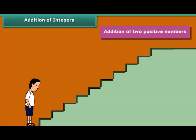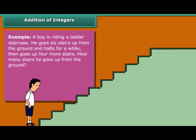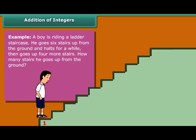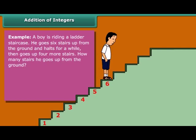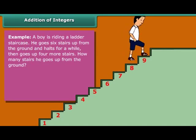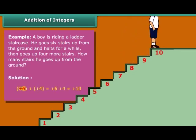Addition of two positive numbers. Example: A boy is climbing a ladder staircase. He goes six stairs up from the ground and holds for a while, then goes up four more stairs. How many stairs does he go up from the ground? Plus 6 plus plus 4 equals plus 6 plus 4, which equals plus 10.